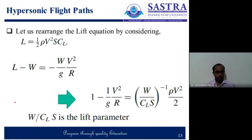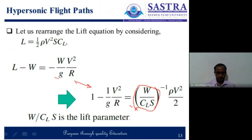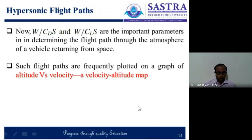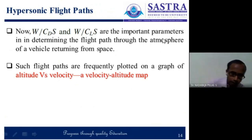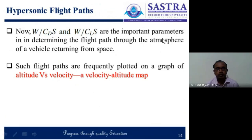Here we can say that the lift equals one-half rho V-squared S C_L, and then we solve this equation and finally we have a term called W by C_L S. W by C_L S is called the lifting parameter or lift parameter. So finally, W by C_D S and W by C_L S are the two important parameters — one is ballistic parameter and another one is lifting parameter — which determines the flight path through the atmosphere of the vehicle.